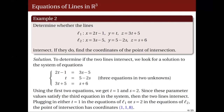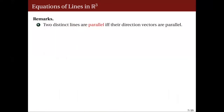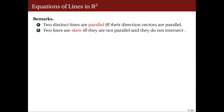If the first two equations have a solution but those values do not satisfy the third equation, the two lines do not intersect, and we have two possible scenarios: either the two lines are parallel, or the two lines are skewed. Two distinct lines in space are parallel if and only if their direction vectors are parallel. Two lines are skewed if and only if they are not parallel and they do not intersect.